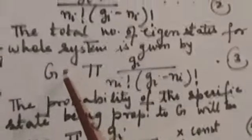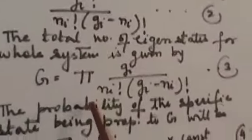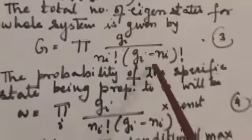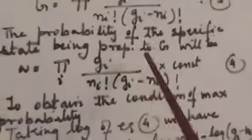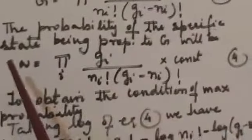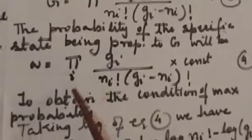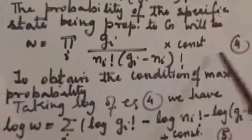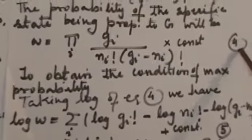The total number of eigenstates for the whole system G is equal to summation, that is pi GI factorial by NI factorial into GI minus NI factorial, equation number 3. The probability of the specific state being proportional to G will be W is equal to pi I GI factorial divided by NI factorial into GI minus NI factorial into a constant. That is equation number 4.